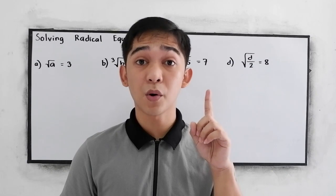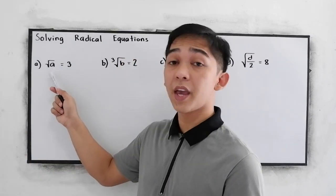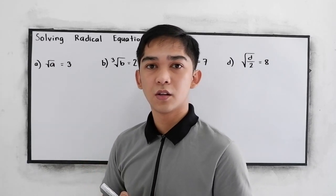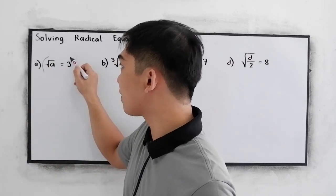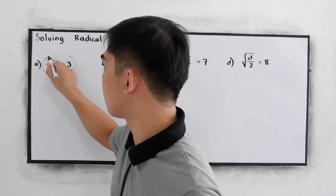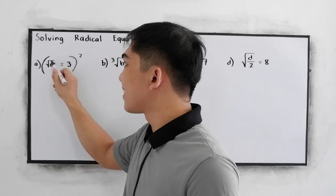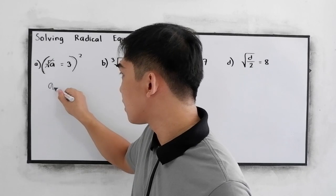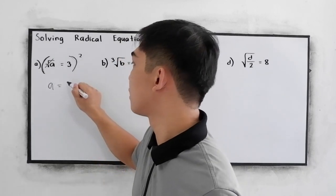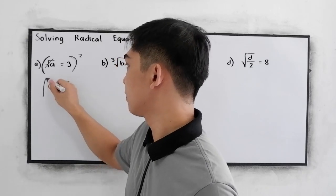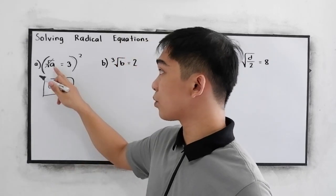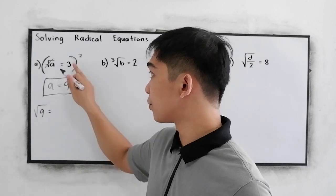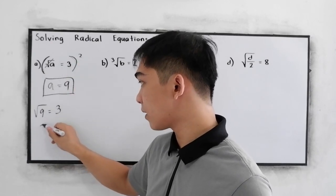Let's start our example number one. If we have the square root of a is equal to 3, how are we going to find the value for a? We know that if we're going to square our equation, the radical sign will be cancelled out. So the remaining is a is equal to 3 squared, that is 9. If we substitute, we have square root of 9, which is 3, is equal to 3.